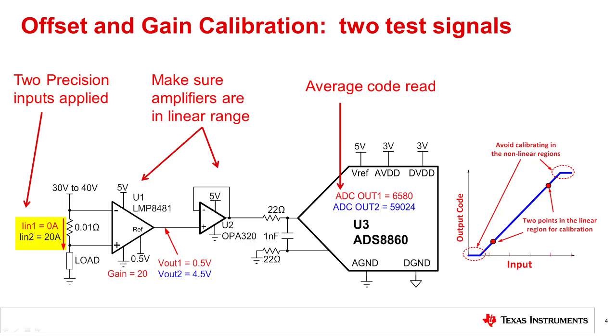In this example, we apply 0 amps and 20 amps and measure the associated output codes. Note that 0 amps drives the output of U1 to 0.5 volts, and 20 amps drives the output to 4.5 volts. So these test signals keep the system in the linear range. It is very important that the test signals used are very accurate. Any error in the test signal will introduce error in the calibration coefficients and minimize the effectiveness of the calibration.